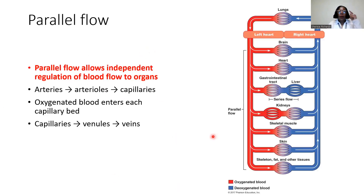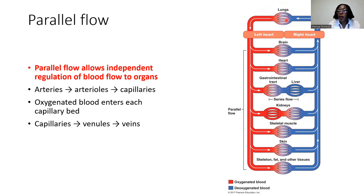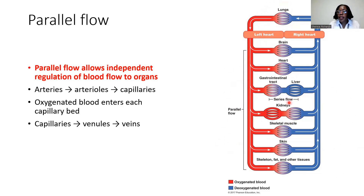Alternatively, parallel flow is where blood has options — different routes it can take depending on the different organ systems. So it's going to go out into your arteries, into your arterioles, into your capillaries, then into your capillary beds. And then here, in either the pulmonary system or the systemic system, it's going to have an option as to where it can go — to the right lung or the left lung in the pulmonary circulation, or to your brain, heart, GI tract, kidneys, et cetera in the systemic circulation. We describe this as a parallel flow.